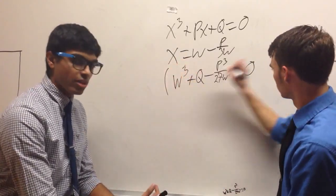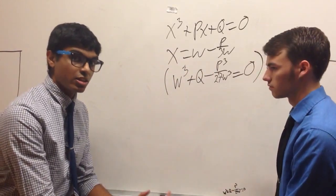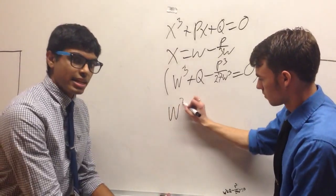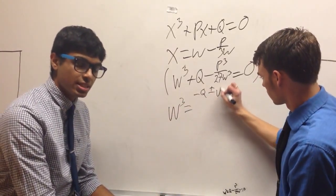Then once you have this, you multiply it by w cubed to get it into a form where you can plug it into the standard quadratic equation, which as many of you know is negative b plus or minus square root of b squared minus 4ac over 2a.